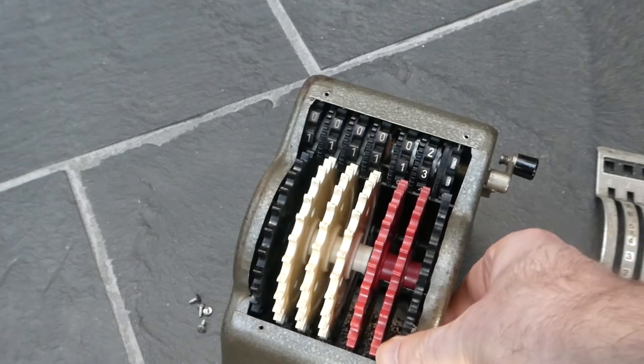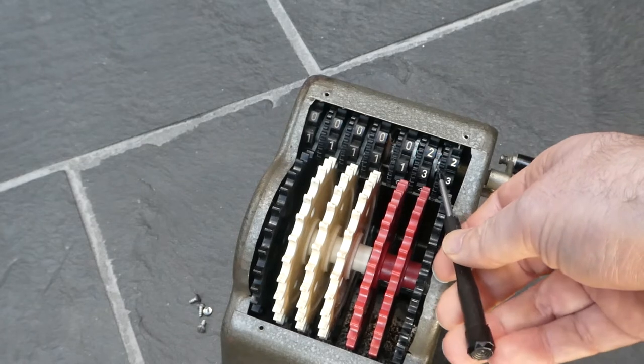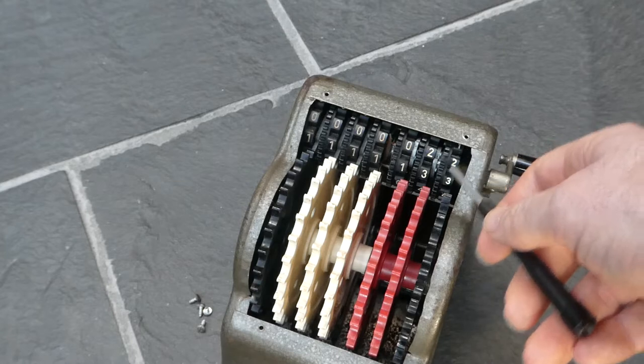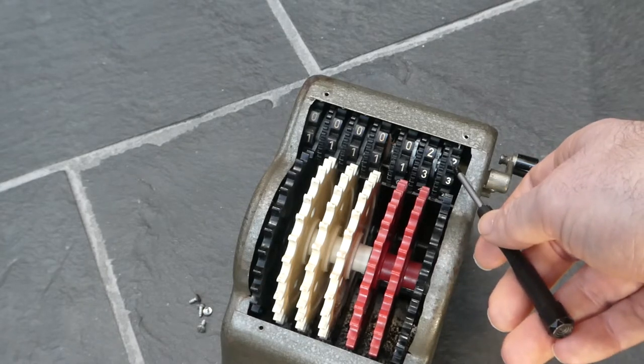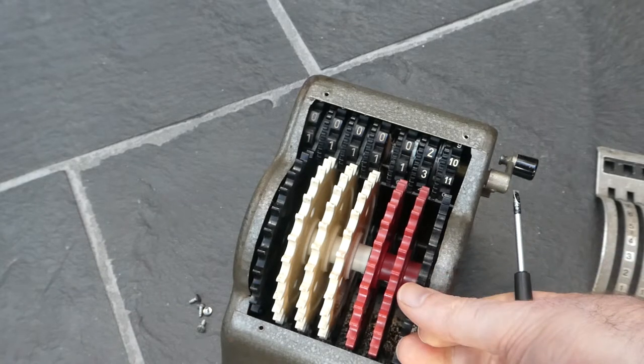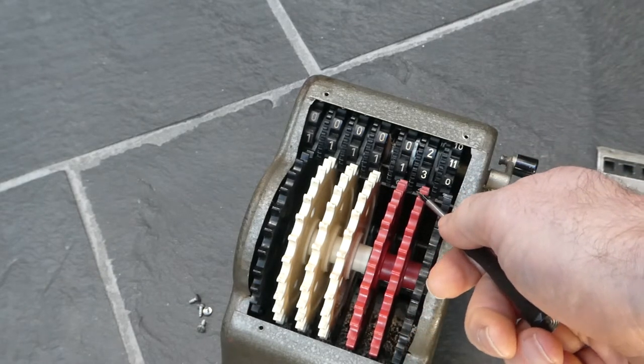These number wheels, they have a wheel on the side here with one big tooth that grabs onto the next number wheel when this carries over. So when this column reaches 11, that tooth will move this next wheel along.